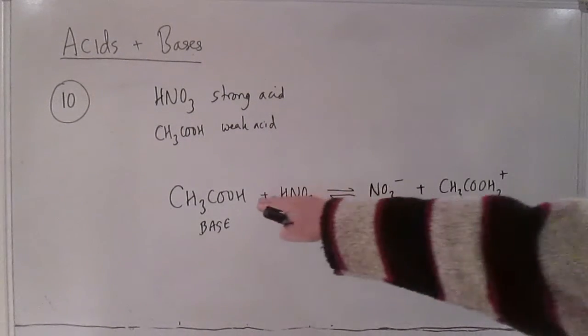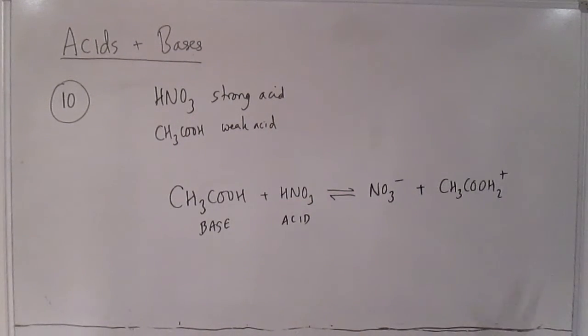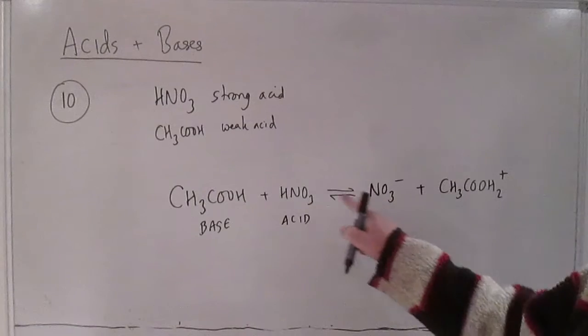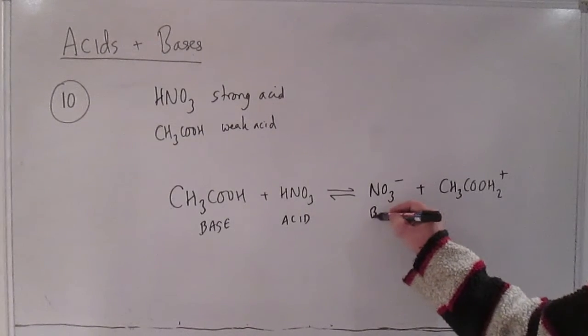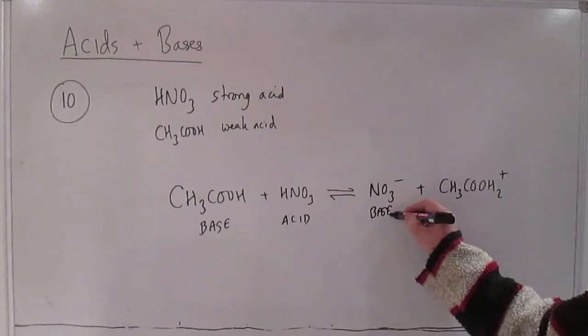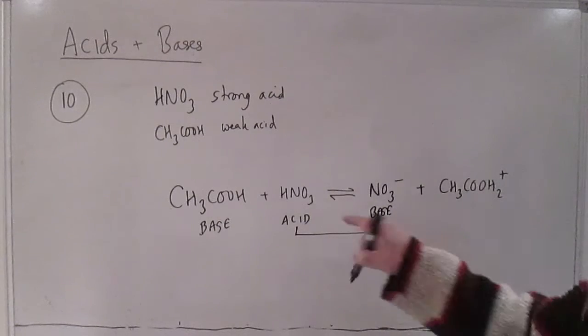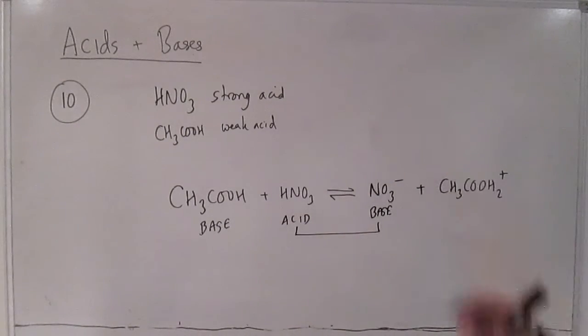So it looks weird because we're used to this losing a proton not gaining one but that's what happens in these strange non-aqueous mixtures. Again Bronsted-Lowry tells you that we've got to have an acid and a base in this side and clearly nitrate is the conjugate base of nitric acid so that's one conjugate pair acid and base just differing by one H plus.